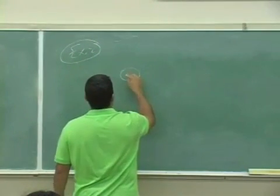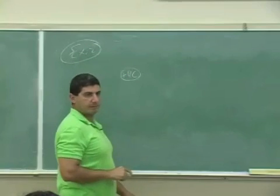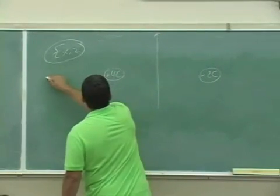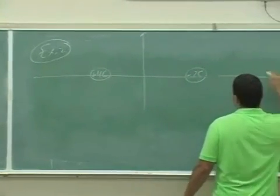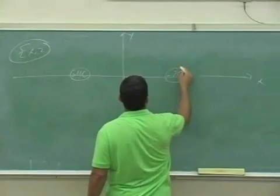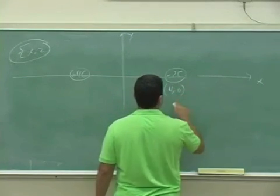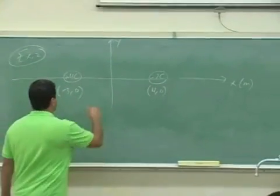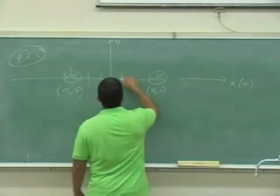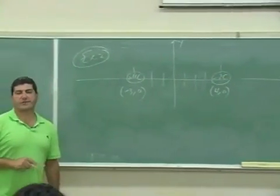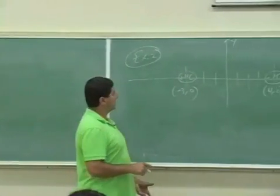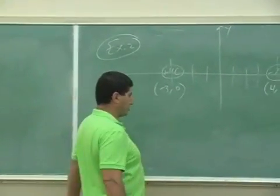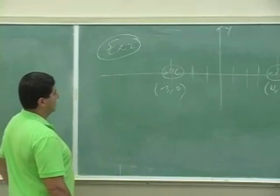Let's say there's a charge here: plus four Coulombs and minus two Coulombs. There's an XY axis, this point is at (4, 0) and this is at negative three zero — so that's seven meters apart. We have two charges like that, and something is making them stay there so they're not going to move towards each other — they're stuck there.